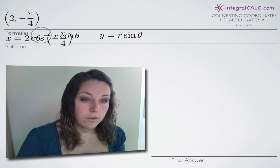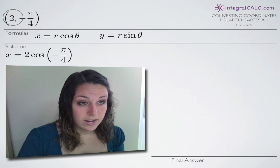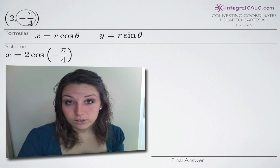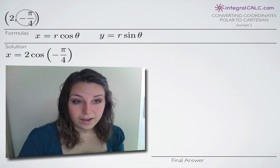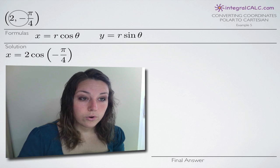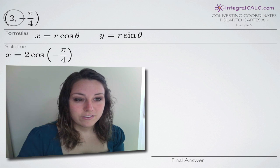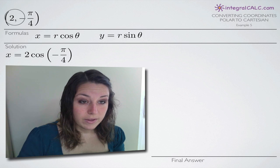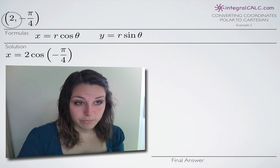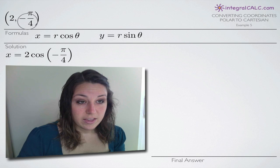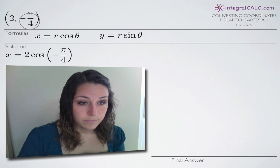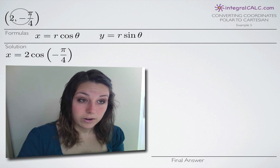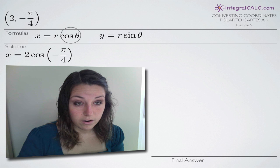We first recognize that our polar coordinates are in the form r comma theta. Normally with rectangular or Cartesian coordinates, your coordinates are x comma y. With polar coordinates, the first value is r and the second is theta — r being the distance from the origin, theta being the angle from the x-axis. So two is r and negative pi over four is theta, which we'll plug into our two formulas.